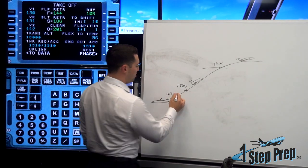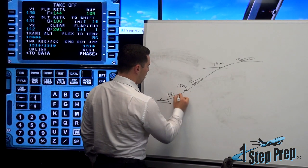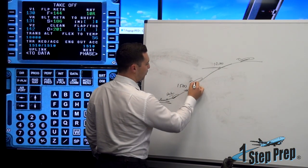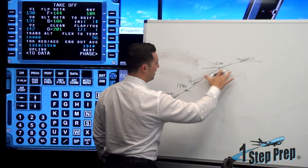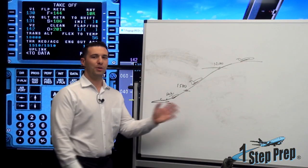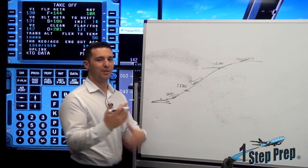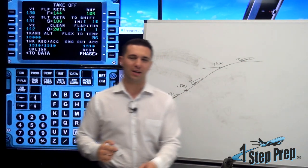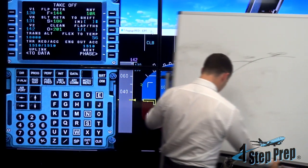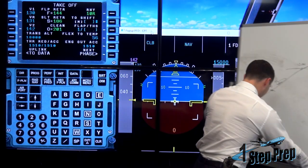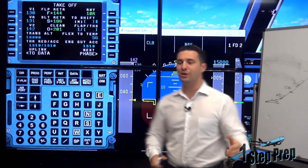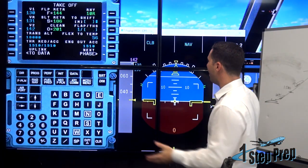So: first option, we're below the thrust reduction altitude; second, we're in between thrust reduction and 10,000; and finally we're above 10,000. With each one of these we have a different thrust setting and a different pitch attitude. Now I'm going to move the whiteboard out of here, because what I really want to do is share with you what you can see on the screens behind me.